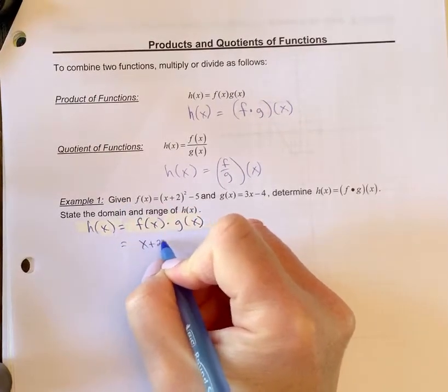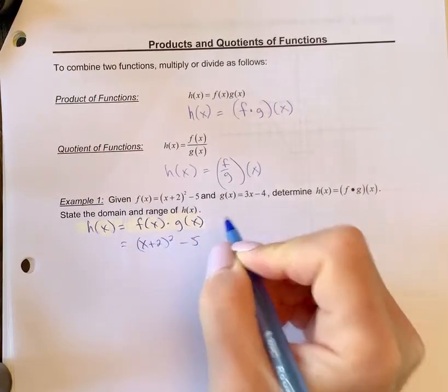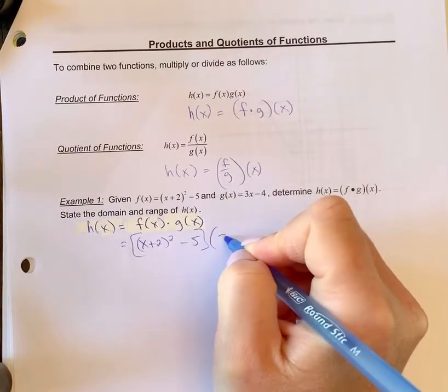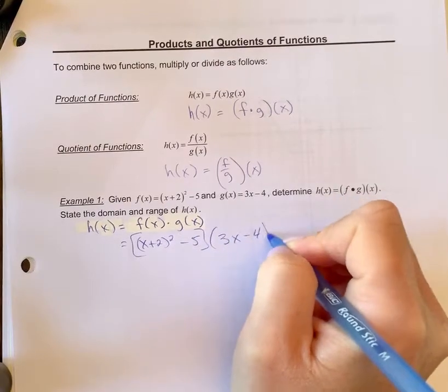So we're going (x + 2) squared minus five, and we're going to multiply it by g(x). So this needs to be around in brackets, and we're going to times that by g(x).